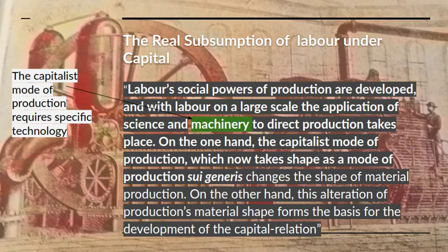On the one hand, the capitalist mode of production, which now takes shape as a mode of production sui generis, changes the shape of material production. On the other hand, this alteration of production's material shape forms the basis for the development of the capital relation. The application of machinery means there is a really different mode of production — machinofacture rather than manufacture. This new physical mode of production develops the capital relation, in that it's now impossible for the independent worker to take hold of the large machine like a steam engine; it can only be operated as part of a collective labour process driving hundreds of looms.